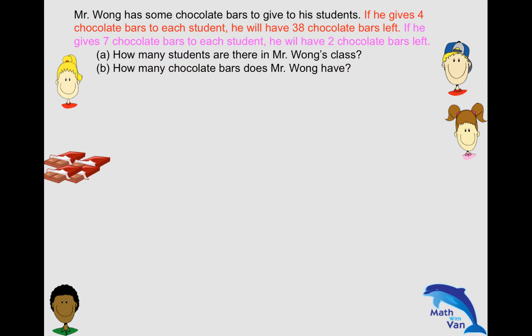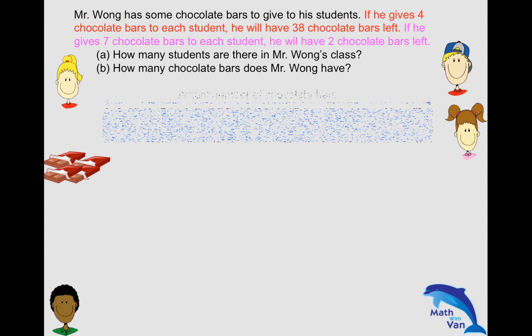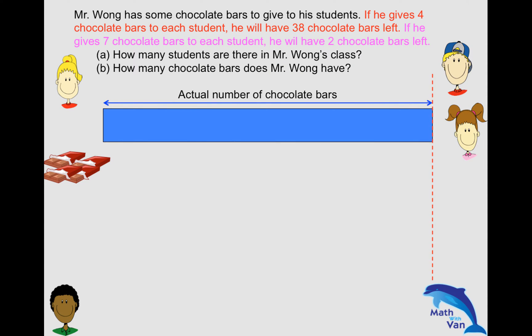As I always say with regards to this kind of question, the original actual number of chocolates is always the same. And for that, this is your reference point. So you have to draw this actual number of chocolate bars. It doesn't matter how long you want it to be, but probably long enough for you to input whatever information you need to. Draw it a reasonably decent size.